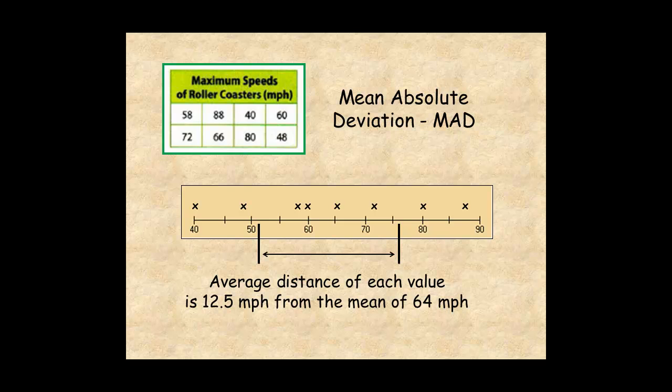A large value for MAD means there's a wide spread of the data around the mean. A small value for MAD means there's a narrower spread of the data around the mean.